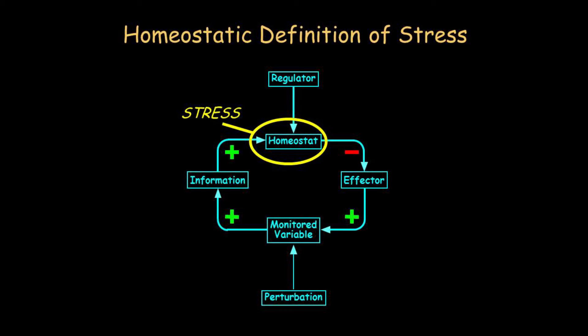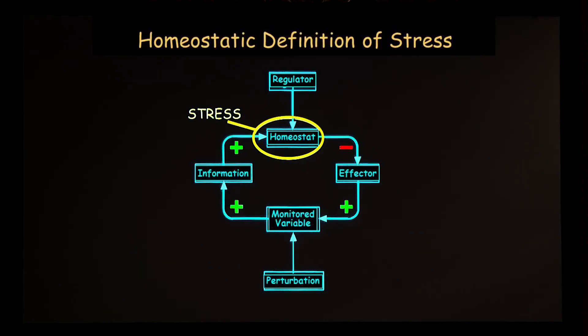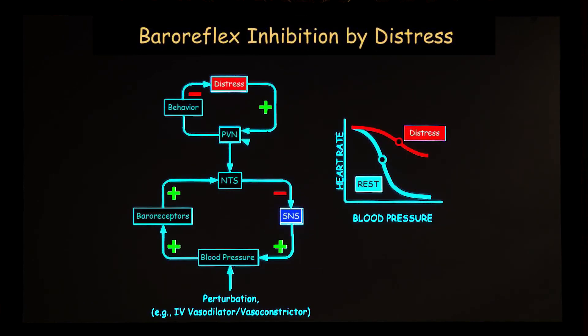It's not easy to define stress without being completely circular — stress is what causes stress, and you know there was stress because of what happened. With an integrative physiological approach, we can break that circularity. Stress is a condition where there's a discrepancy between the information coming to the homeostat and the set point, and when that discrepancy drives an effect, that is stress.